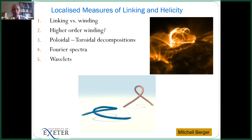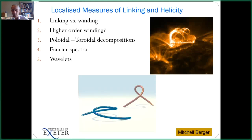We need a Euclidean metric throughout in order to figure out what's happening locally to do the geometry. I'll first talk about linking versus winding — taking linking numbers, instead of having that as a three-dimensional integral, we can see it one plane at a time, or maybe eventually one sphere at a time for concentric spheres.